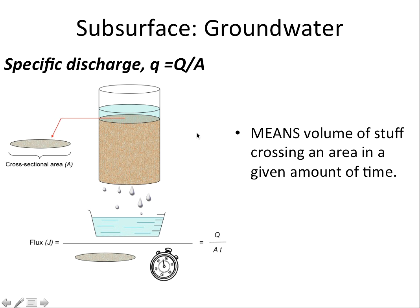If you were trying to measure specific discharge in a lab, you might have a column with a cross-sectional area at the bottom, and you'd be collecting the volume of water coming through that cross-sectional area over a given period of time. So specific discharge means the volume of stuff crossing an area over a given amount of time.